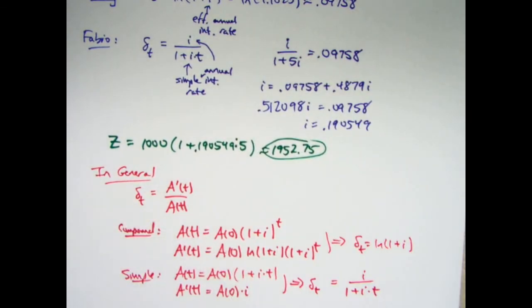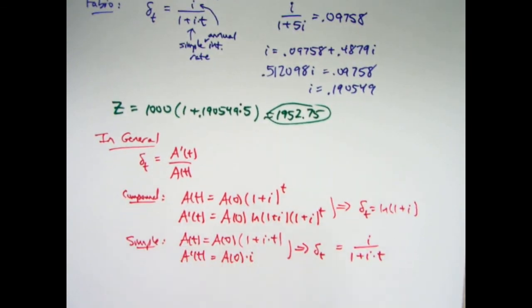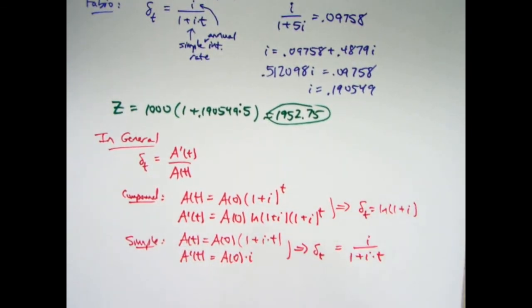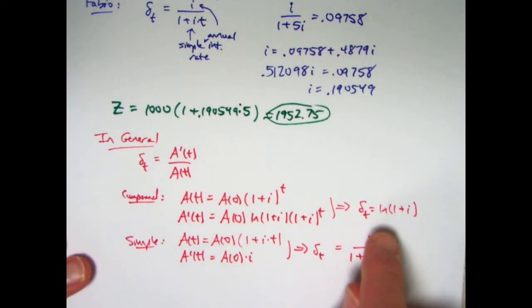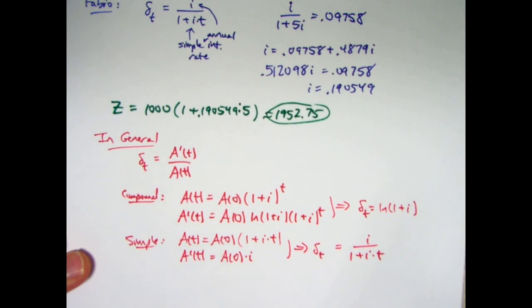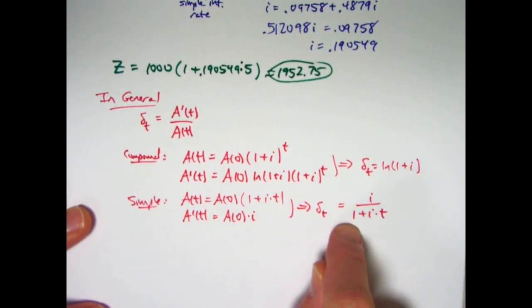Okay, so you can re-derive these things without too much trouble. You really should memorize the fact that the force of interest is constant in the compound interest case to be natural log of 1 plus I, where I is the effective annual yield or effective annual rate. I think this is probably worth memorizing too, but it's not too hard to derive.